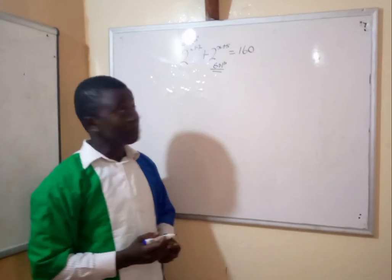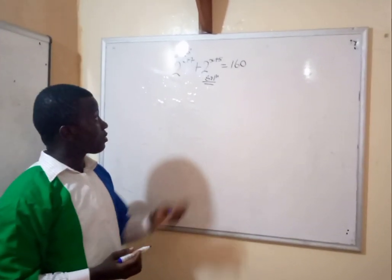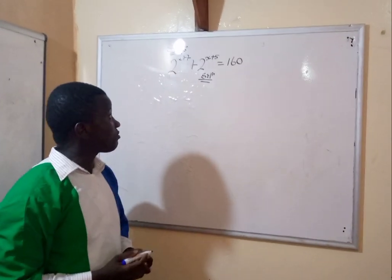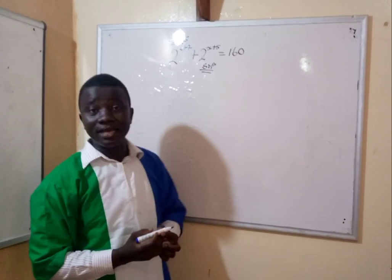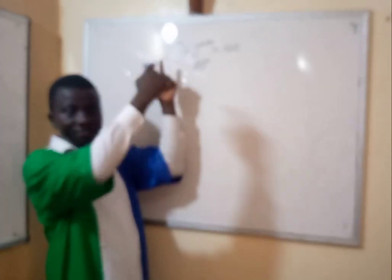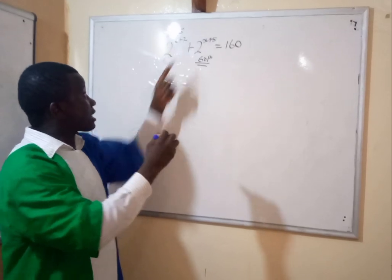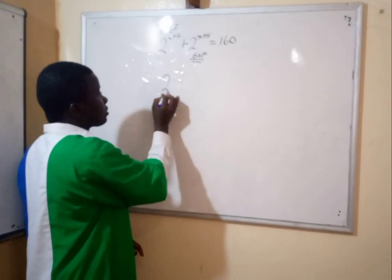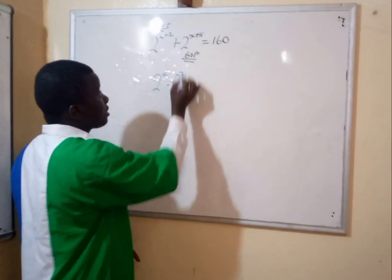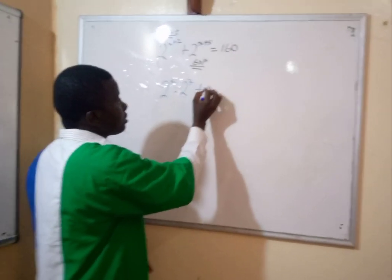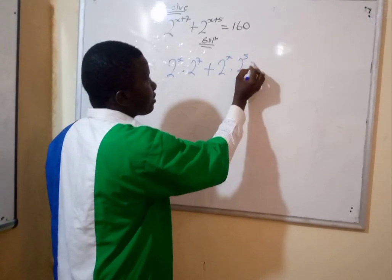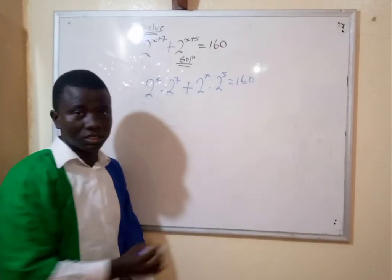Welcome to Maths Forum. In this edition we are going to look at exponentials. We have 2 to the power x plus 7, plus 2 to the power x plus 5, equals 160. The first thing you have to do is apply the exponent law: 2 to the power x plus 7 becomes 2 to the power x multiplied by 2 to the power 7, plus 2 to the power x multiplied by 2 to the power 5, equals 160.